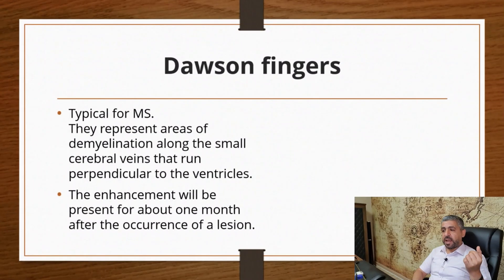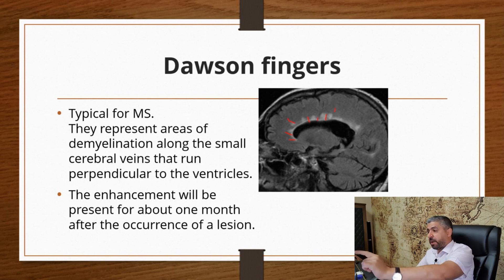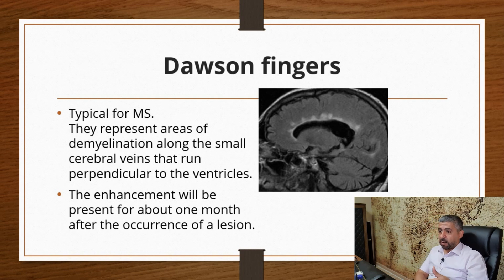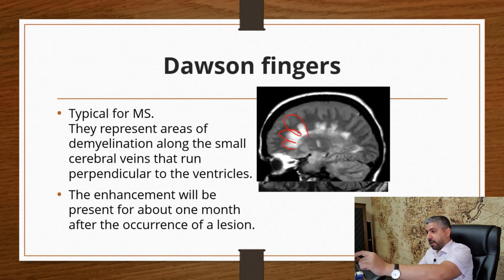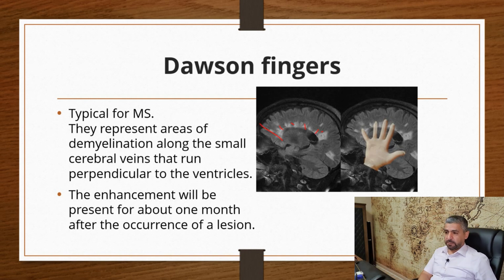One of the criteria used to help diagnose multiple sclerosis is what's called Dawson's fingers, which are typical for MS. These are areas of demyelination along the small cerebral veins that run perpendicular to the ventricle. They must be elongated and perpendicular to the ventricle — longer than wide. Post-contrast enhancement will be present about one month after the occurrence of a lesion. They look like fingers on a glove, which is why we call them Dawson's fingers, and they are specific for MS.